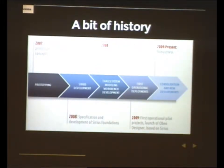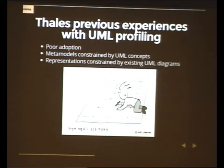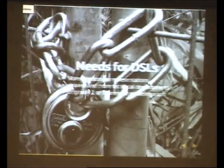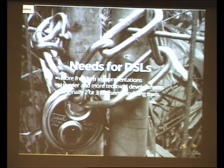Eight years ago, Thales tried to work with UML and tried to adapt the notation by developing their own UML profiles. The result was poor adoption by their users, because as they were mainly system engineers, they didn't know anything about UML. For them it was another new language to learn, and with it they couldn't represent all the concepts they needed. Even worse, the resulting representations were constrained by the existing UML diagrams, which did not fit their expectations.